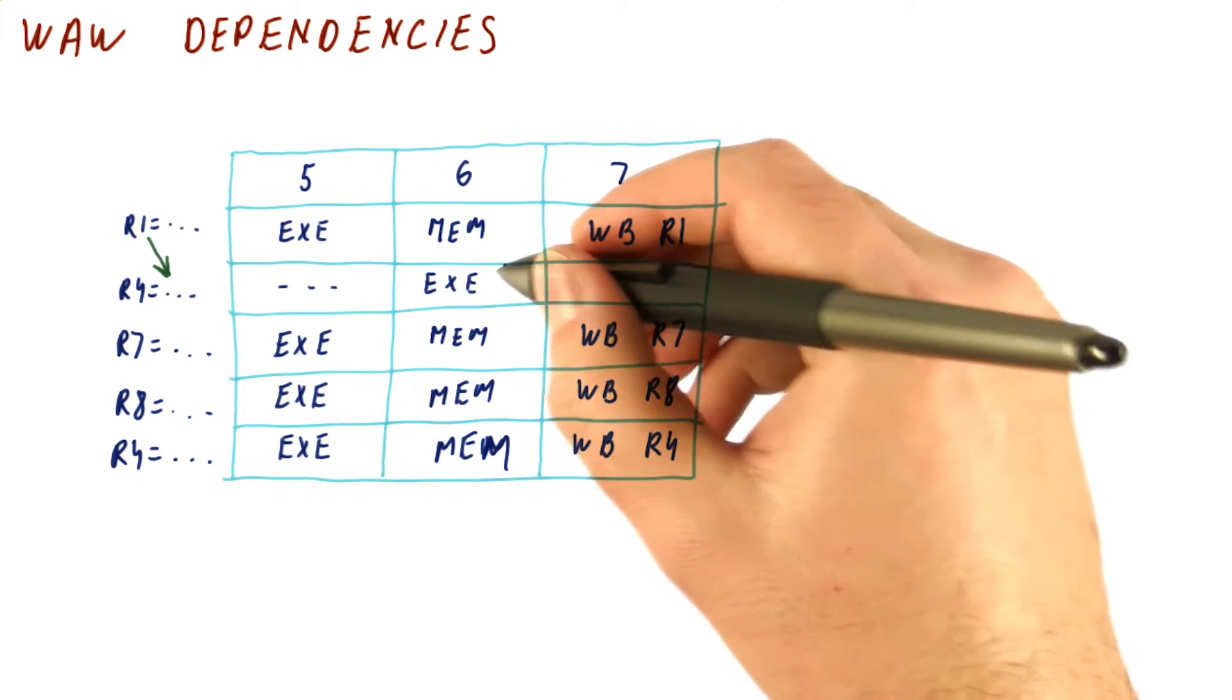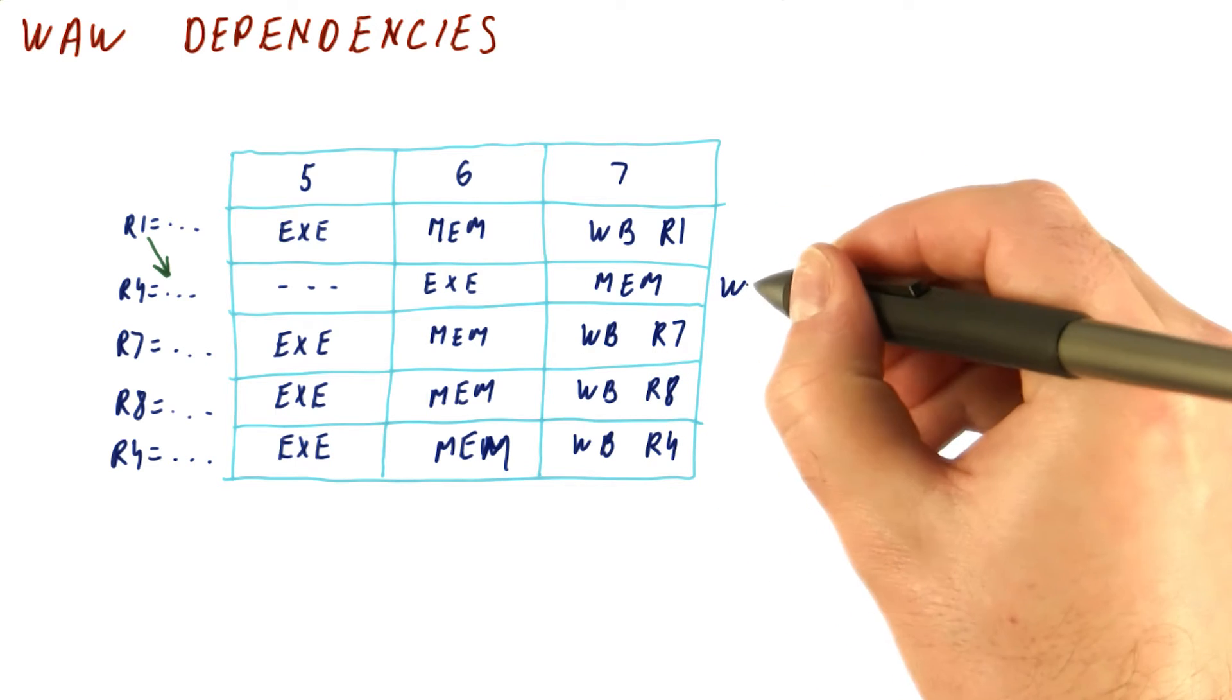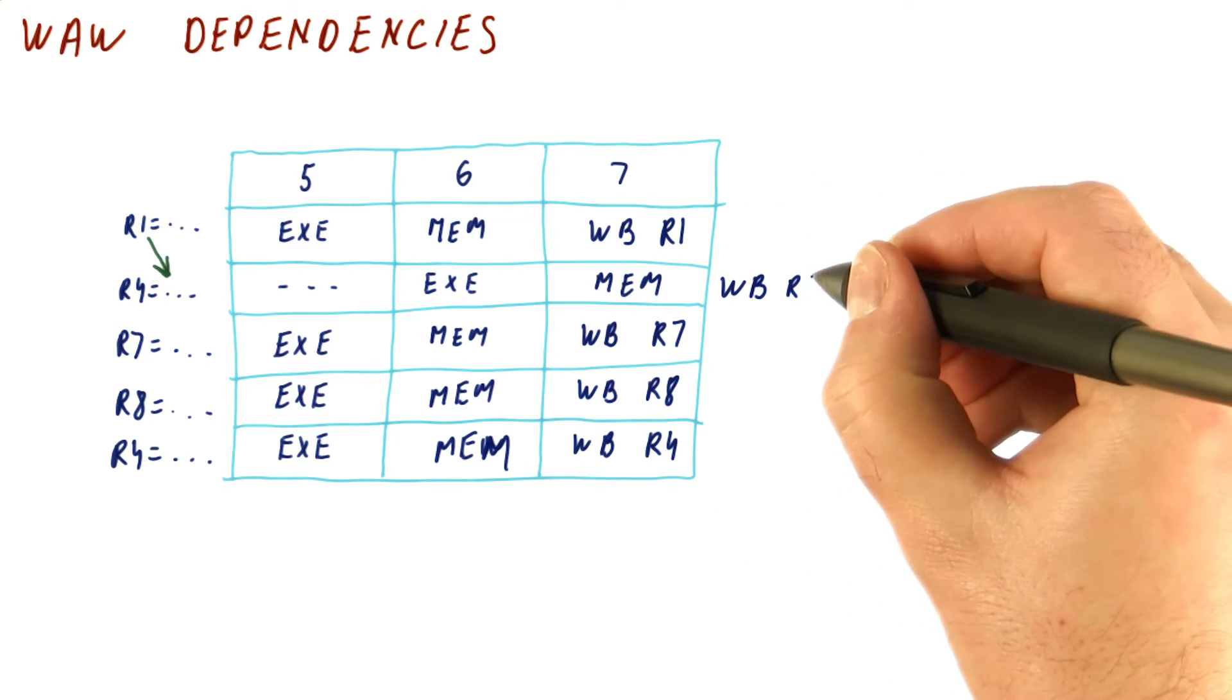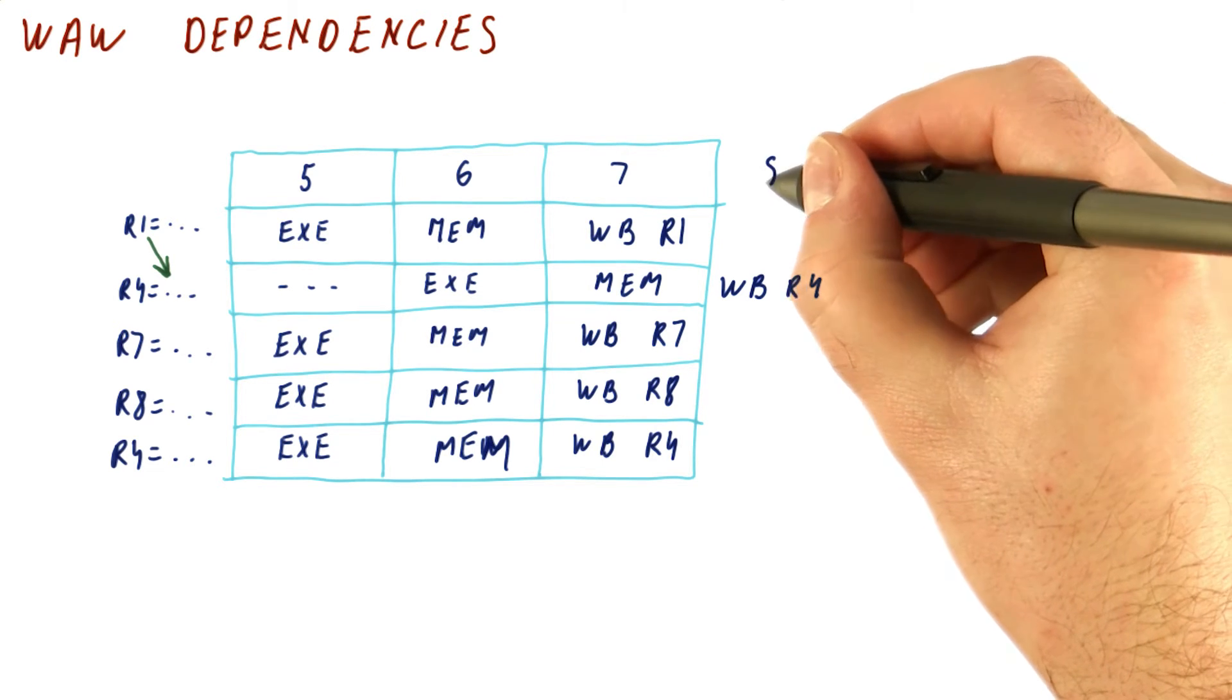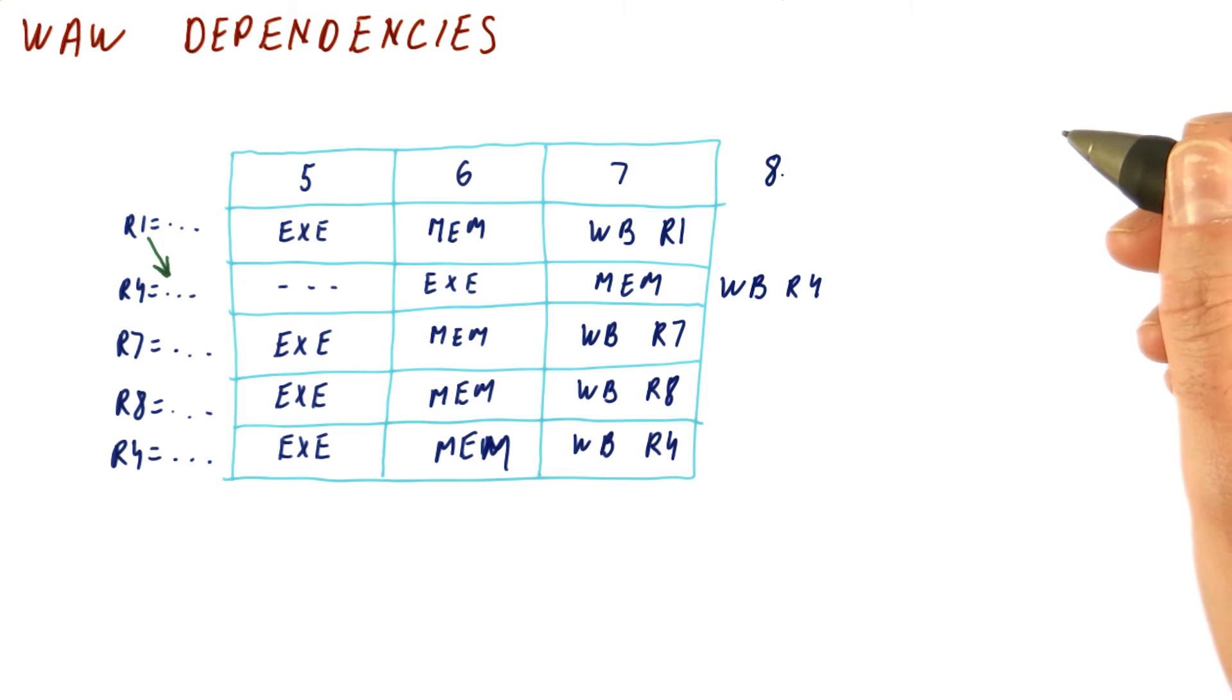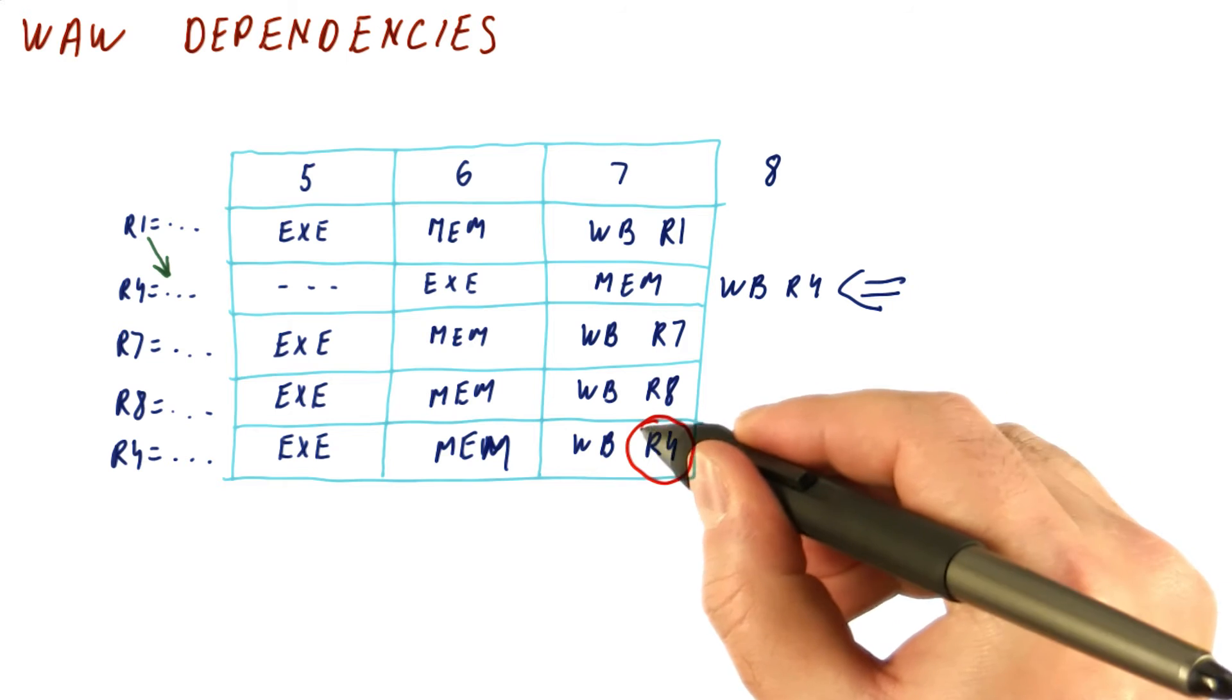However, the second instruction has executed here, so it's going to go through the mem stage here and write the result here. And it's going to be R4. So if you look at what's the final result in R4, the final result in R4 is whatever was the last thing written to it, which is going to be this value. But it should have been this value.